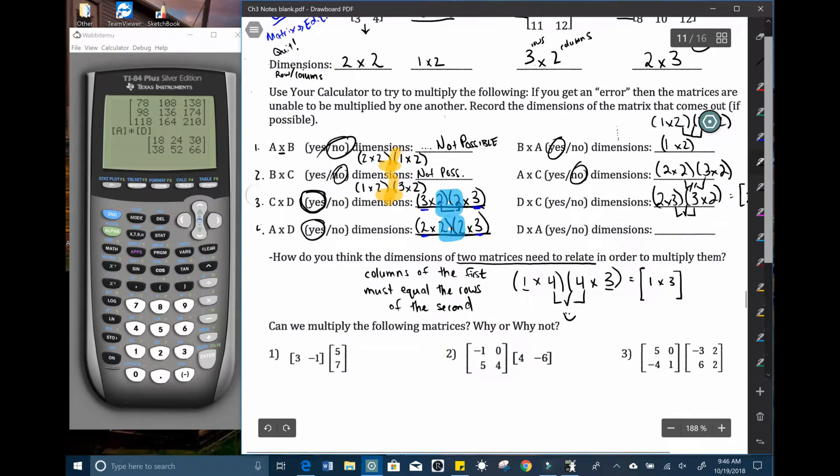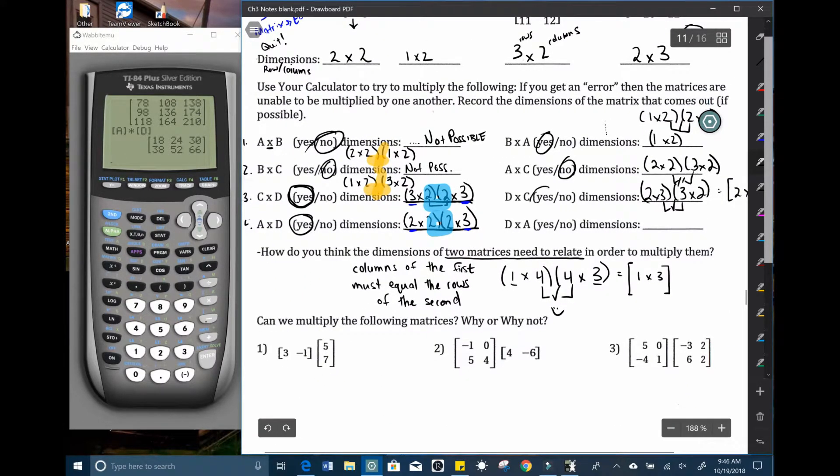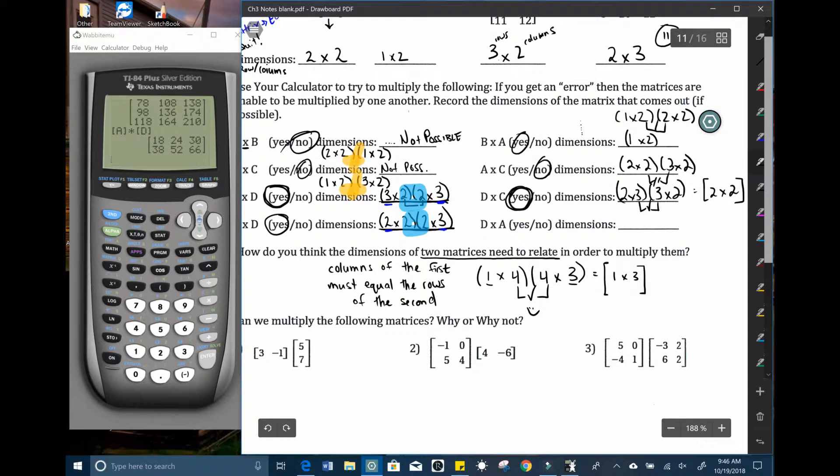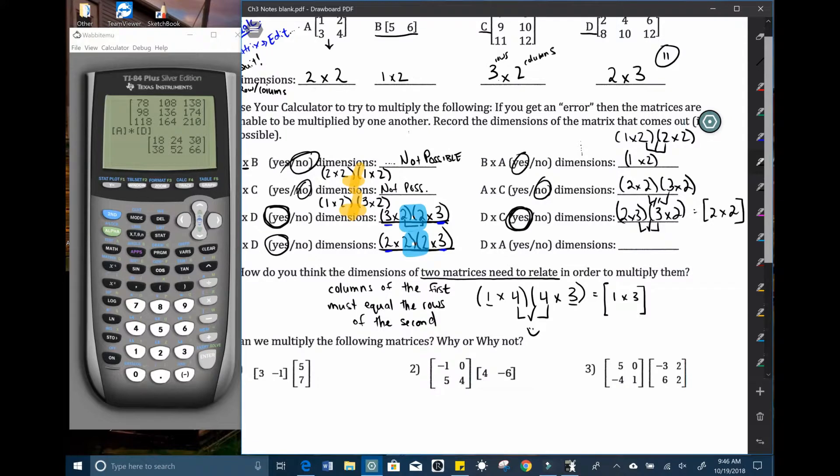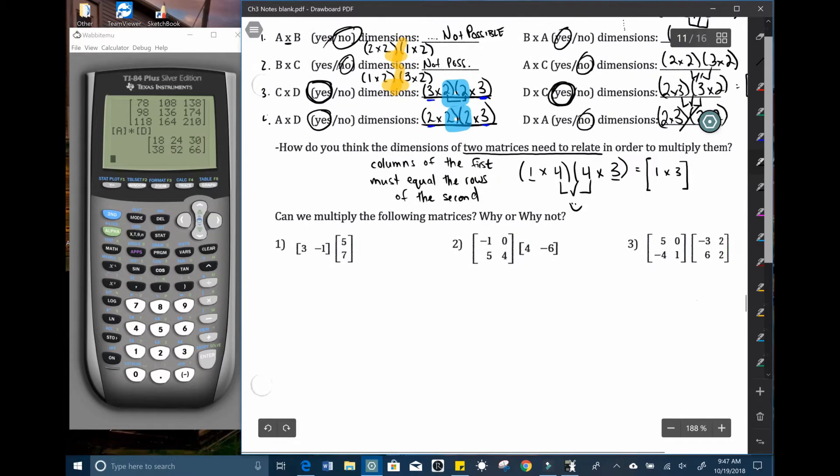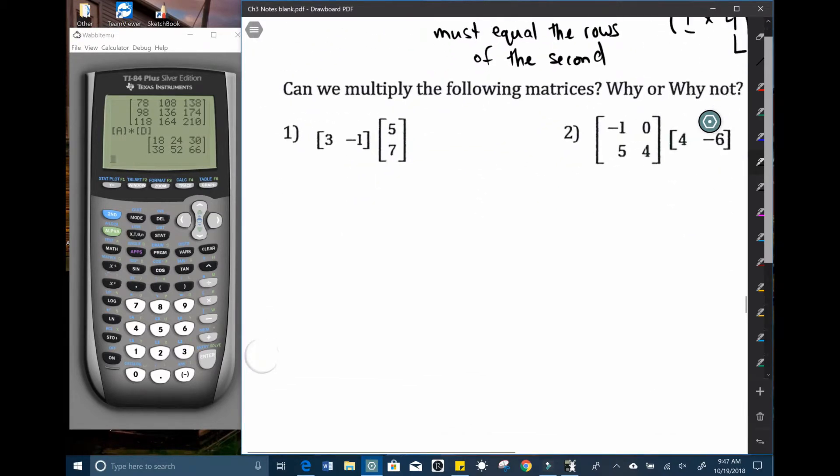So notice that C times D worked. And so this one, matrix multiplication is actually not commutative. So just something to be aware of. And D times A would be a two by three times a two by two. That one is not going to be possible. So pretty easy with those. Can we multiply simply why or why not?